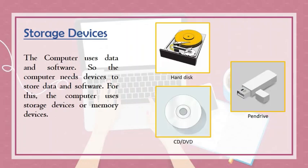Next are storage devices. The computer uses data in software, so it needs devices to store that data. For this, the computer uses storage devices or memory devices. The hard disk is fixed inside the CPU box and stores a huge amount of information. A CD, or compact disk, is a shiny disk that can store information such as documents, images, music, videos, or games. A DVD, or digital video disk, is like a CD but can store much more information. CDs and DVDs can be carried around.